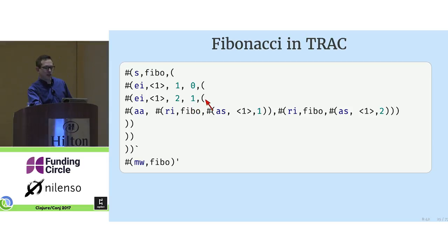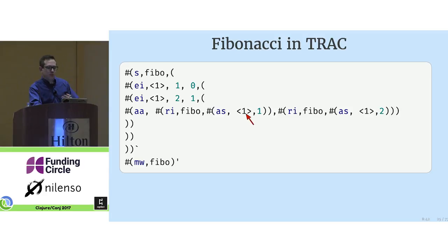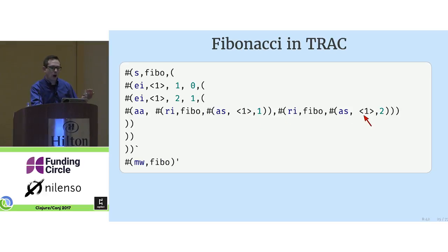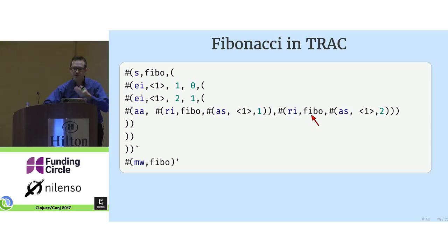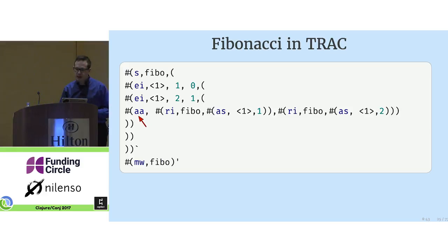All the arithmetic operators start with A for arithmetic, so AS is subtract. Subtract 1 from the first argument, subtract 2 from the first argument. R is recall the symbol fibo, which we are defining — invoke it on those values, get the result of each, add them together, and you have your Fibonacci function.